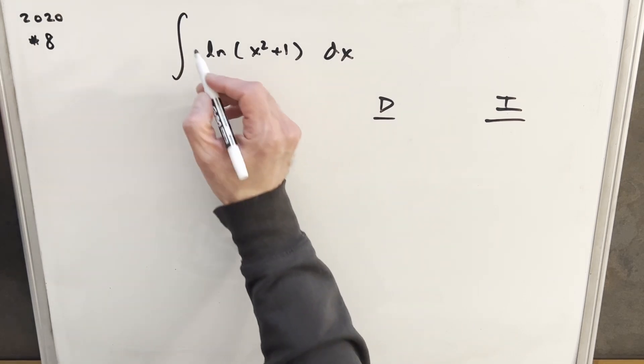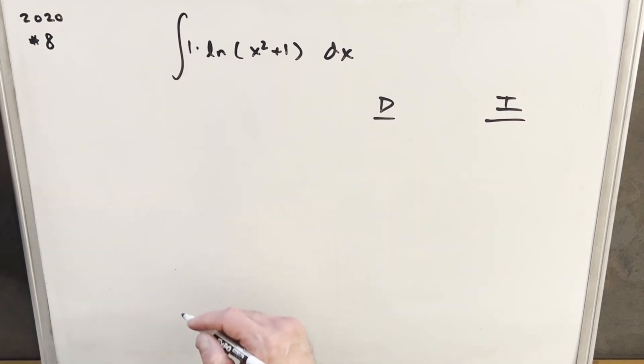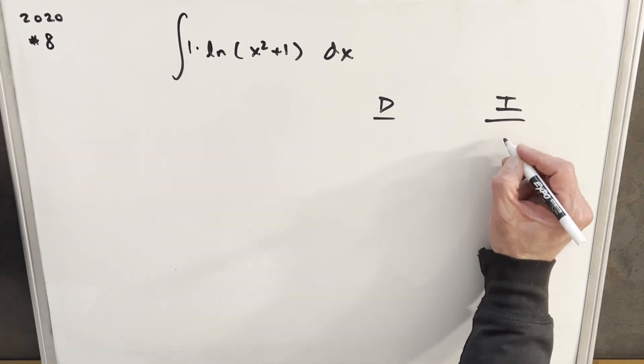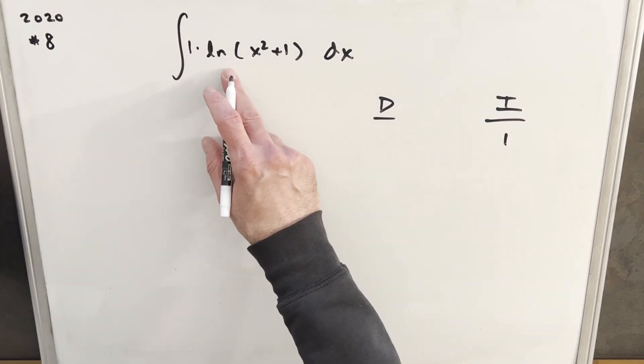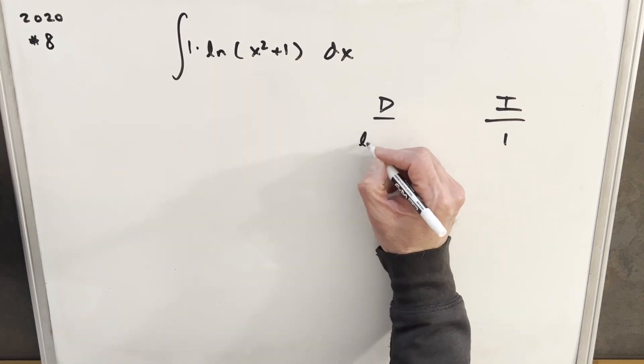There's not a lot to work with here, right? There's only one function, but we can create a one here. And what we'll do is we'll just integrate the one. And we always want to, we pretty much always want to differentiate the natural log function.